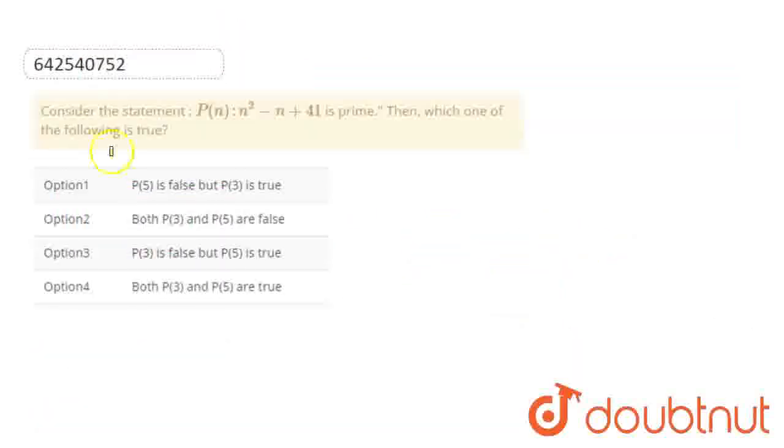Download now. Consider the following statement: p(n) = n² - n + 41 is prime. Then, which of the following is true?